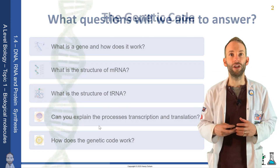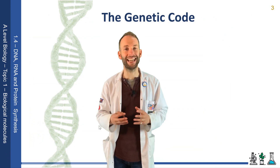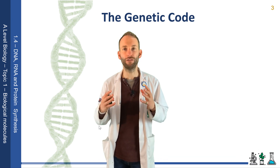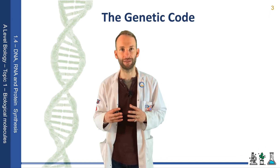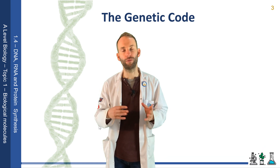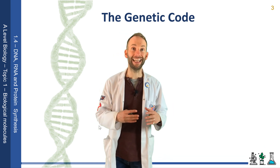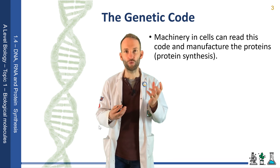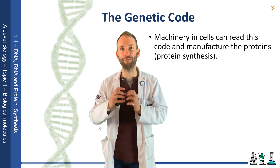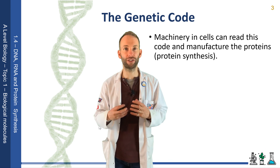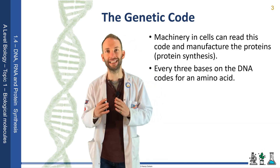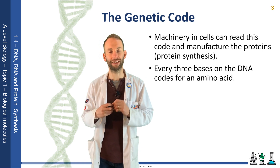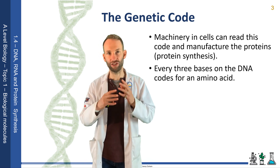So the genetic code. The sequence of bases in DNA is actually a code to make proteins. We've already explained just how vital proteins are to living organisms. Proteins are the building blocks of cells, while DNA are the instructions to build those proteins. And machinery in cells can read this genetic code and then manufacture the protein, and that process is called protein synthesis. Now, every three bases on the DNA codes for an amino acid.